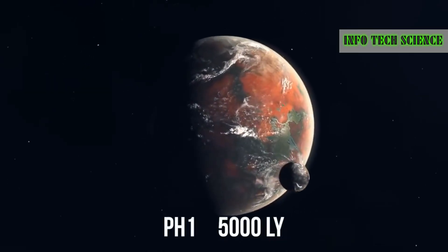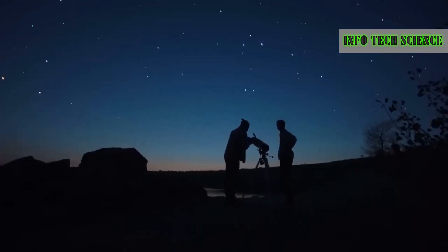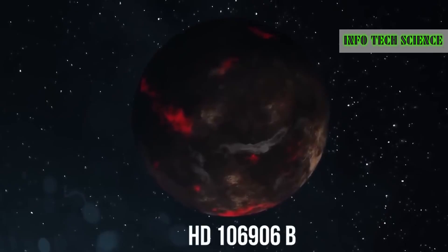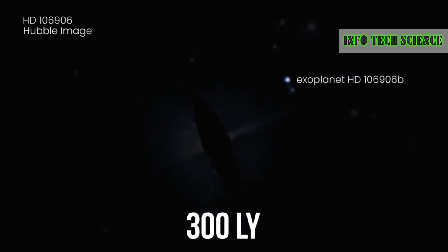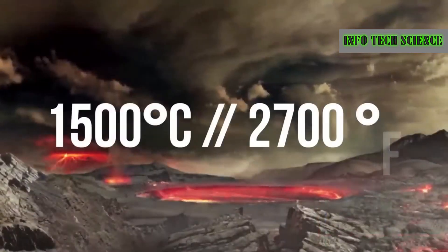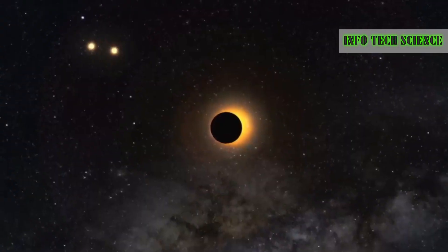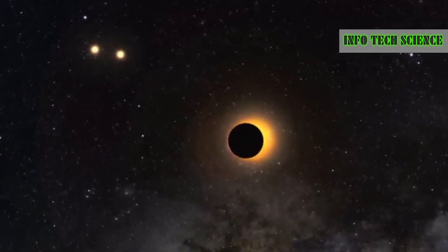Then there's HD 106906b, a giant exoplanet with a mass approximately 11 times that of Jupiter. It's located 300 light years away from Earth in the Crux constellation. This planet is completely alone with no stars nearby. Its surface reaches 1,500 degrees Celsius, possibly because it's still young and hasn't had enough time to cool off yet.